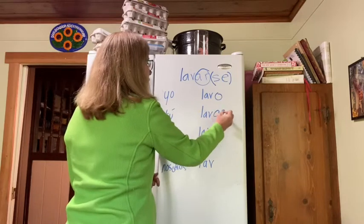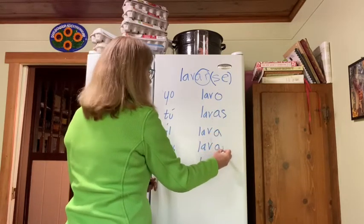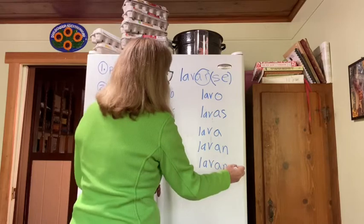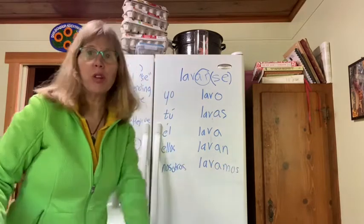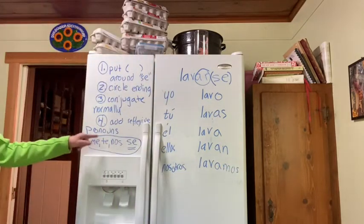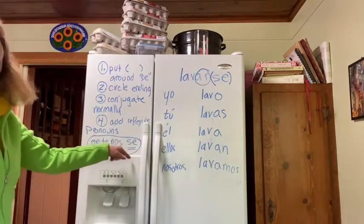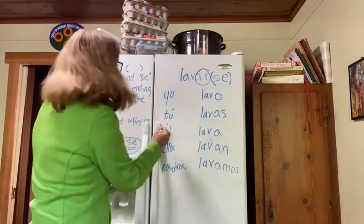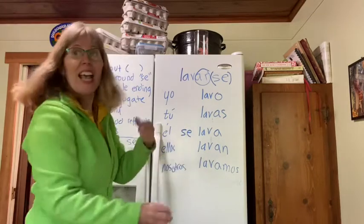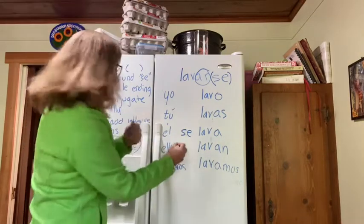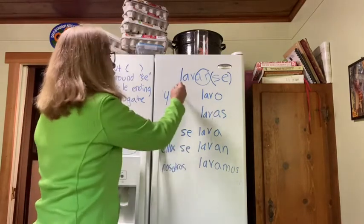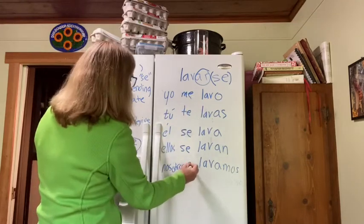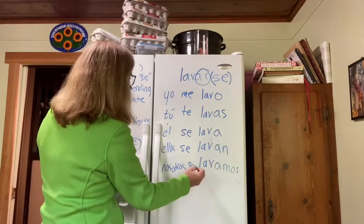Yo lavo, tú lavas, él lava, ellos lavan, and nosotros lavamos. Add in the pronouns — you're choosing between me, te, nos, and se. Se is used twice, singular and plural: él se lava, ellos se lavan. Yo me lavo. Tú te lavas. Nosotros nos lavamos.